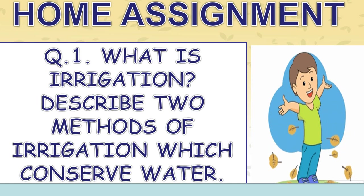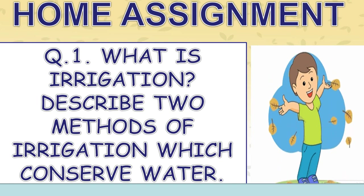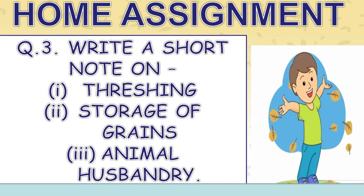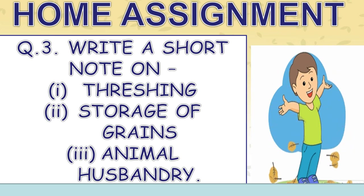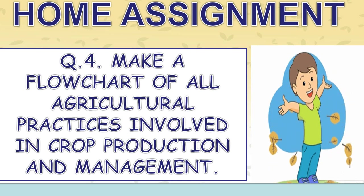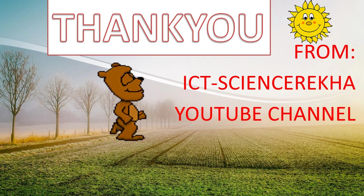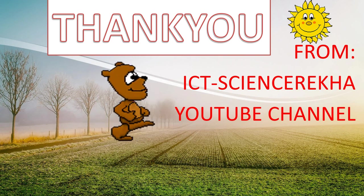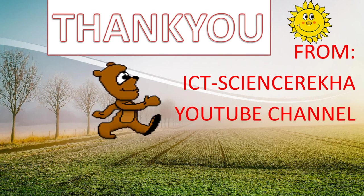Home assignment. Question 1: What is irrigation? Describe two methods of irrigation which conserve water. Question 2: What are weeds? How can we control them? Question 3: Write a short note on threshing, storage of grains and animal husbandry. Question 4: Make a flow chart of all agricultural practices involved in crop production and management. Friends, we have completed Chapter 1 — Crop Production and Management. Thank you and have a nice day.